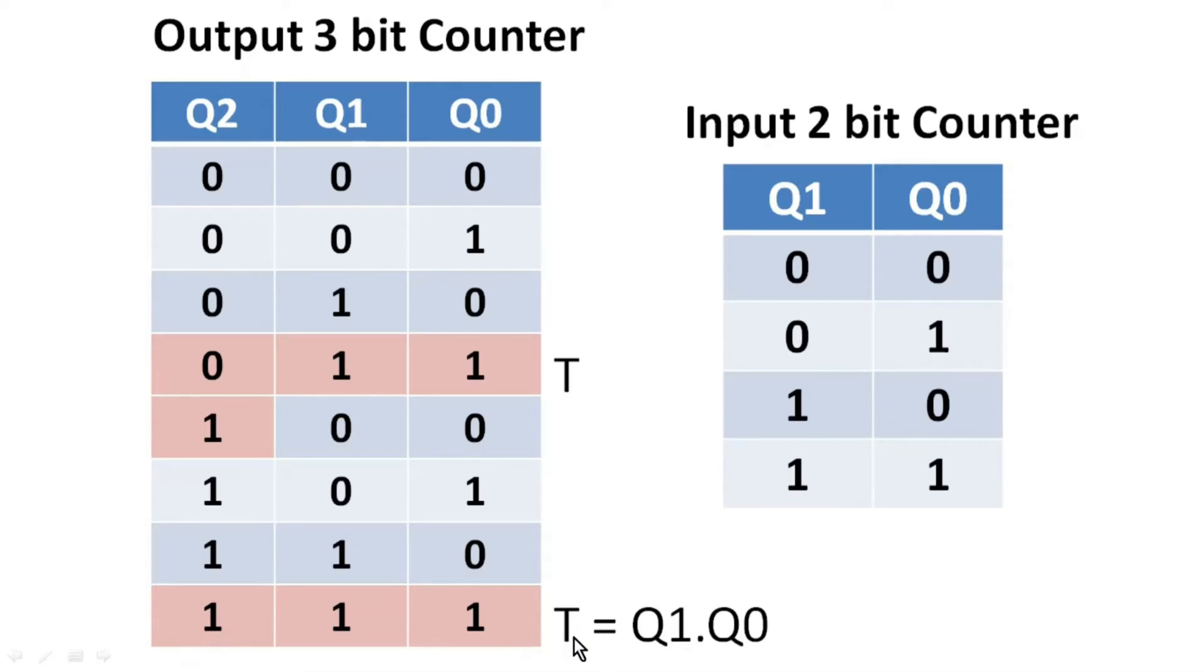Let us generate a signal T which will go high when Q1 and Q0 both are high and we will use this signal T for toggling the signal Q2. Very easily we can calculate the expression for T. It will be equal to Q1 and Q0. When both are high T will be high, otherwise T will remain 0.